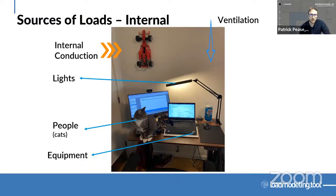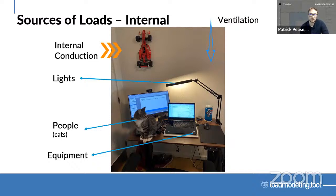Another load at the room level is ventilation — the outdoor air we're delivering to a space to make sure it's breathable, meeting CO2 requirements and standards like ASHRAE 62.1. In some cases, such as during COVID, we saw increased ventilation to keep places safer. That does increase load, because the more outdoor air brought in won't be at the ideal temperature.